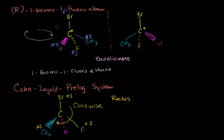That's this one right here. So you might guess this must be the opposite — the counterclockwise version. We can do it really fast. Same idea: the largest one, bromine is number one; fluorine is number two; carbon is number three; hydrogen is number four. What we want to do is put hydrogen in the back. So we're going to rotate it to where fluorine is right now.